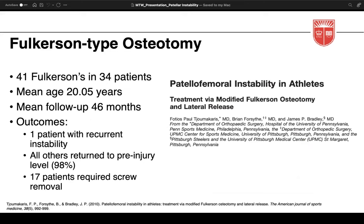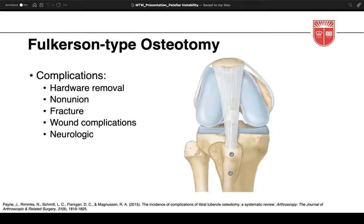A Pittsburgh study examined 41 Fulkerson osteotomies with concurrent lateral release in 34 patients, mean age 20, mean follow-up 46 months. There was one patient with recurrent instability — later diagnosed with Ehlers-Danlos syndrome. All others returned to at least their pre-injury level of sport. Notably, 17 patients required screw removal. The most common complication at about 50 percent is hardware removal; non-union, fracture, and wound complications each come in at about one percent.